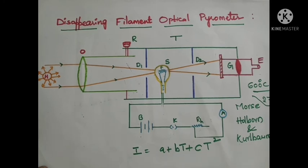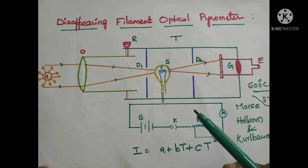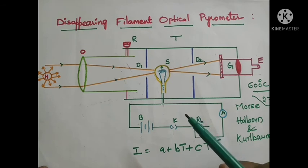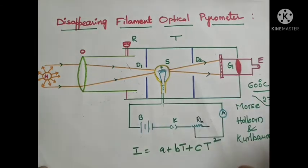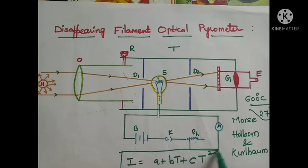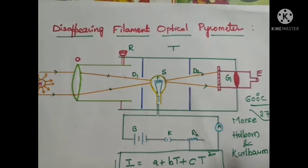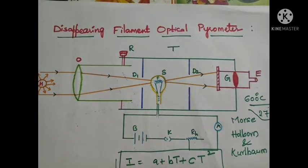Even if the experimental object is not a black body, the corrections may be easily applied and are relatively small. This is all about the disappearing filament pyrometer — very simple structure and a simple formula: I = a + bT + cT², where I is the current flowing through the circuit and T is the temperature of the hot body to be measured.